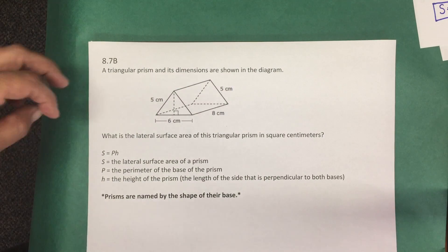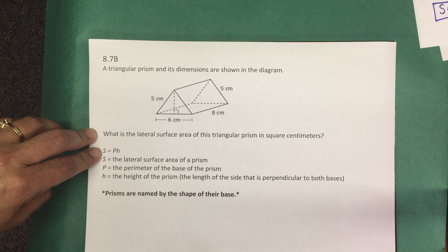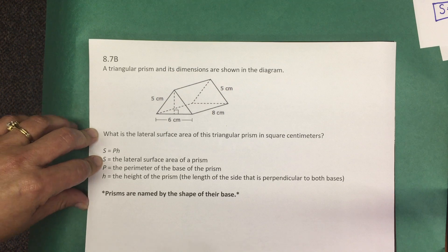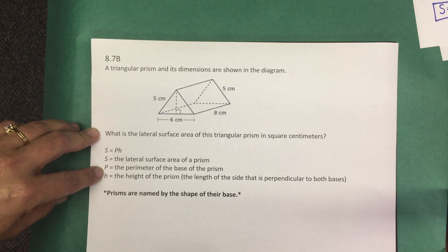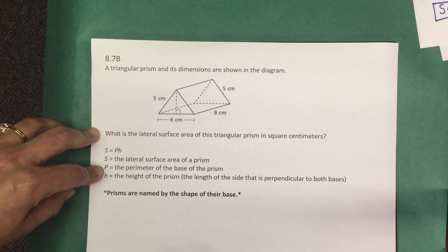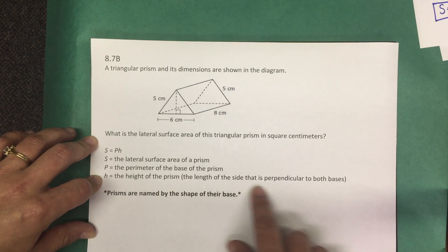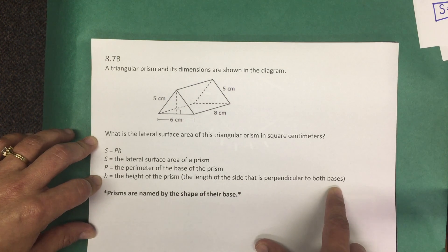Let's look at that formula a little more closely and identify what each variable represents. The S is the lateral surface area of the prism. The capital P is the perimeter of the base of the prism. H is the height of the prism, and just a side note that the height is the length of the side that is perpendicular to both bases.